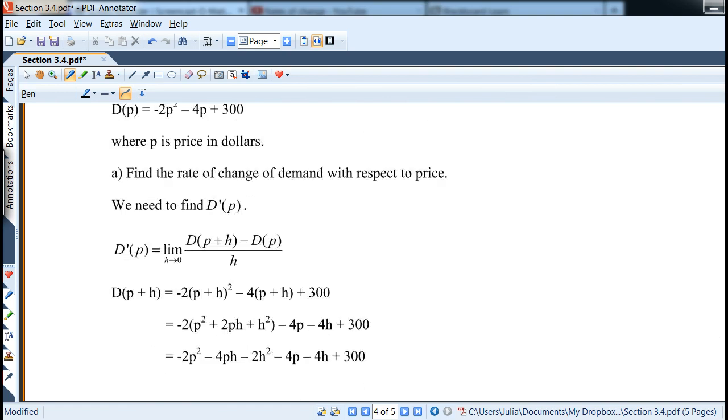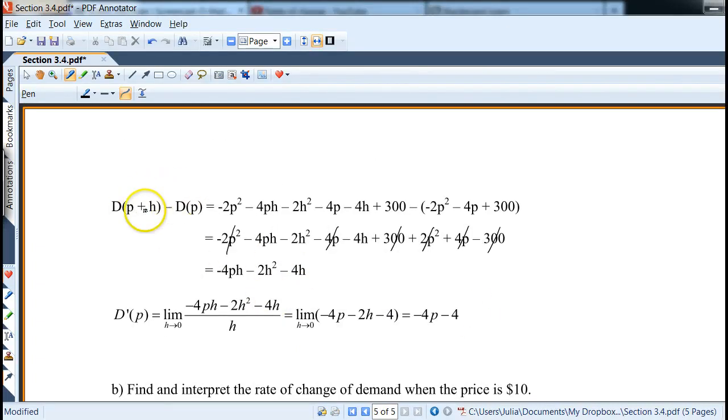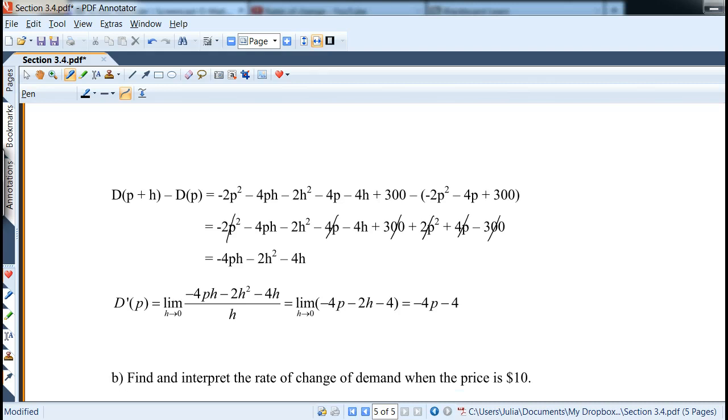If you're working this out correctly, you should actually take it on the side and try to work it out. Then I typically subtract the original function, same idea. We have terms that are left with p and h, negative 4ph minus 2h squared minus 4h. Then I plug it straight into the limit, divide by h. Then what's left, we can plug in h equals 0. Notice how we'll get negative 4p minus 4. So that's the derivative of the demand function.